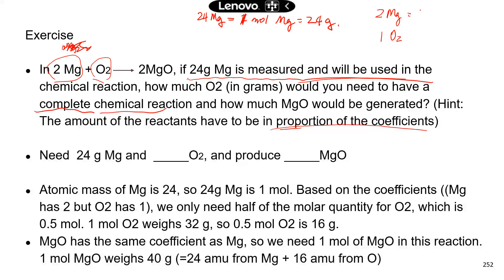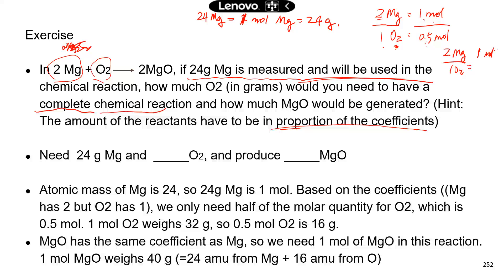So now we have one mole of magnesium. We have to do this in proportion to get a complete chemical reaction. Magnesium and oxygen are in a 2-to-1 ratio. So if magnesium is one mole, then oxygen is half of that — we only need half a mole of oxygen. Or you can set up the equation: two magnesium to one oxygen, with one mole of magnesium — solve for X. Two to one equals one to X, so two X equals one.